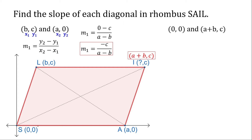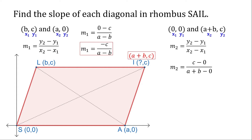For the slope of line 2, we have points 0, 0 and A plus B, C. Let's identify point 1 and point 2, use the slope formula, substitute, and simplify. Now we have the slope for line 2. In proving geometric properties, we compare slopes to determine if lines are parallel or perpendicular, but we will cover that in the next video.